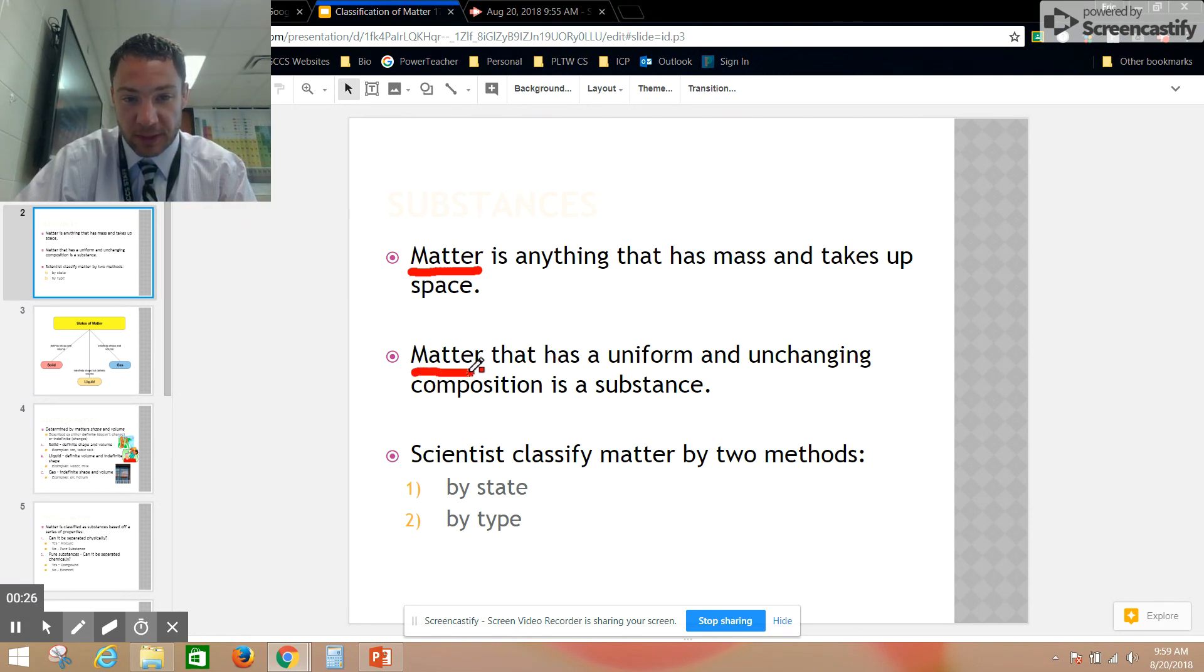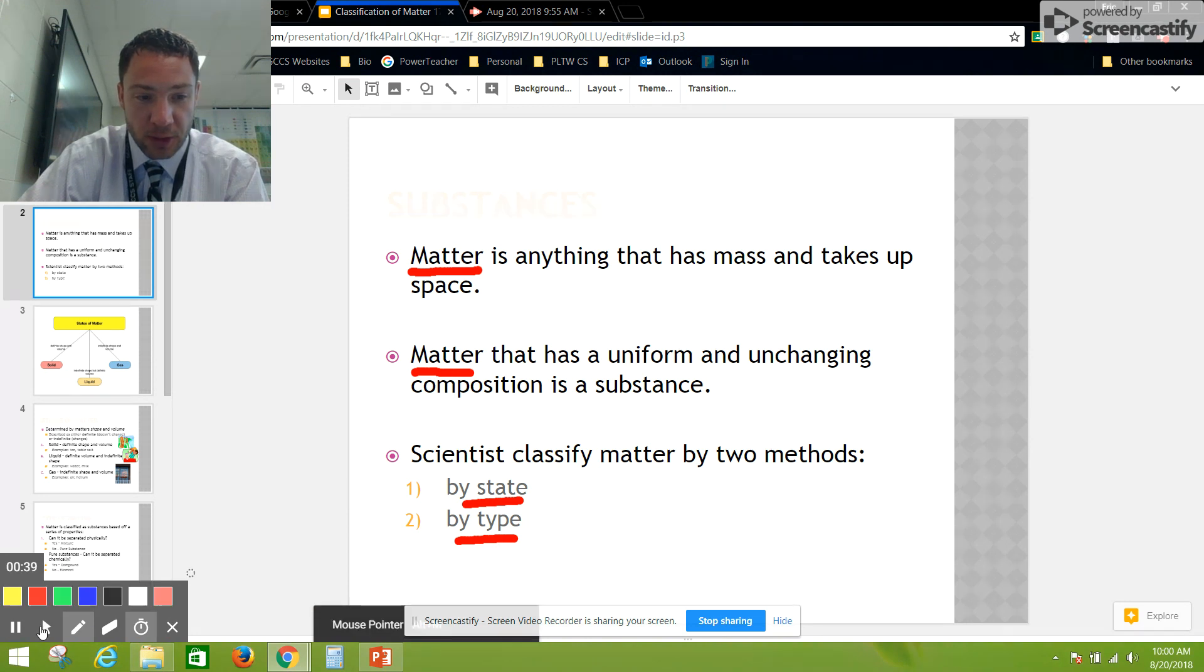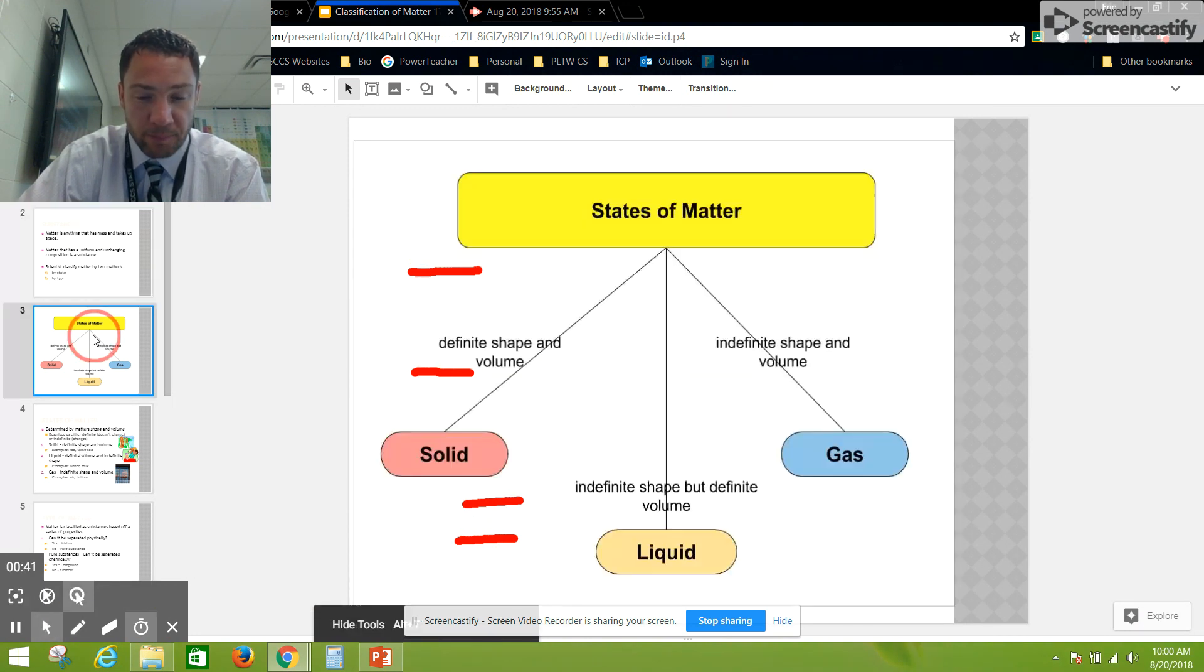Scientists will classify matter by one of two ways: either by state or by type. We're going to talk about these two. We're going to focus first on state.